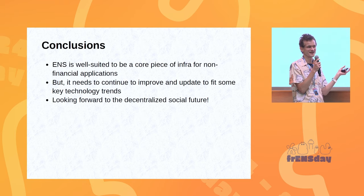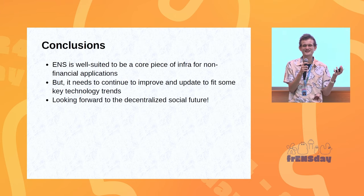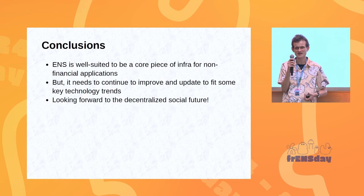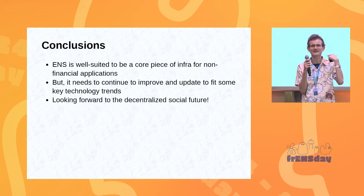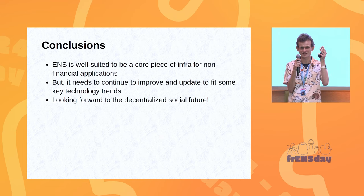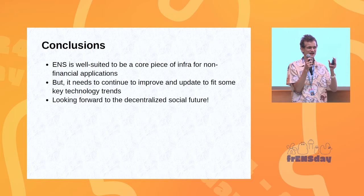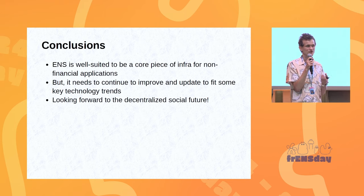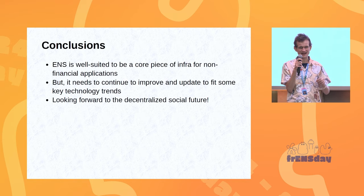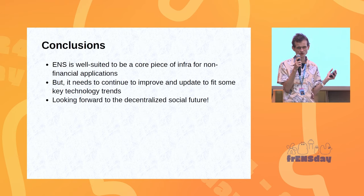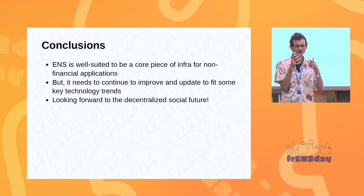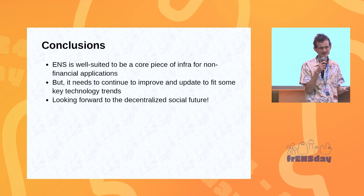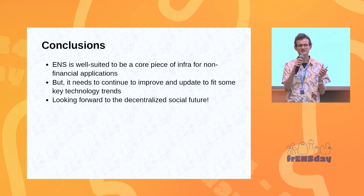ENS obviously needs to continue to improve and update. The key trends are: one, the switch to L2s; two, non-EVM protocols including non-EVM L2s and also privacy protocols; three, off-chain data; and four, users potentially having many more addresses. All of these things tie into each other. For example, one of the most viable paths for Ethereum to have more privacy is if we can have application-specific wallets and normalize using some kind of privacy protocol to do transfers between applications — that feels more realistic than trying to make everything decayed automatically. ENS will have to interact with that as well. Looking forward to the decentralized social future.